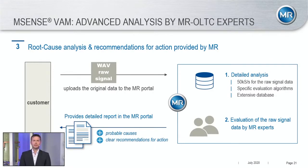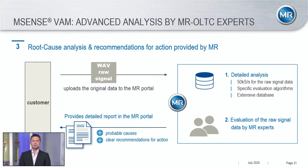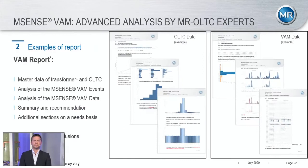The offline interpretation of the online data can be done either via direct access from our site to the device with a modem, or via a download of raw data sent to our database through the MR web portal. In the database, our experts can compare patterns over time, and if we have an original measurement pattern from our factory, they can compare the pattern over time with the very first one to indicate slow-moving failures. This of course cannot be done online — it needs to be done offline. The result of this interpretation will be a report with clear recommendations for you as the operator of the tap changer and transformer.